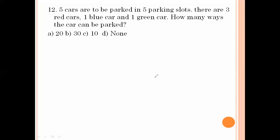5 cars are to be parked in 5 parking slots: 3 red cars, 1 blue car, 1 green car. How many ways can the cars be arranged? The 5 cars can be arranged in 5 factorial ways. Since 3 red cars are repeated, we divide by 3 factorial. Blue and green are each arranged in 1 factorial way. So 5 factorial divided by 3 factorial times 1 factorial times 1 factorial equals 120 divided by 6.